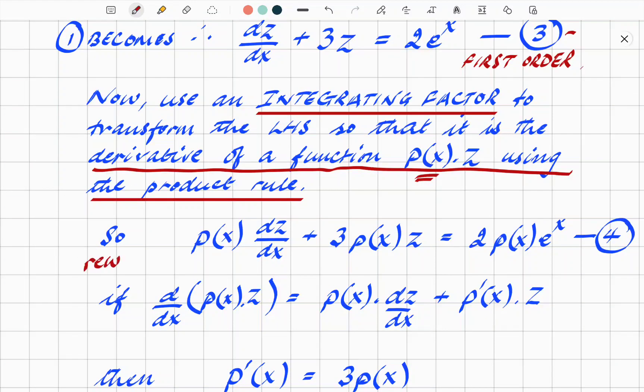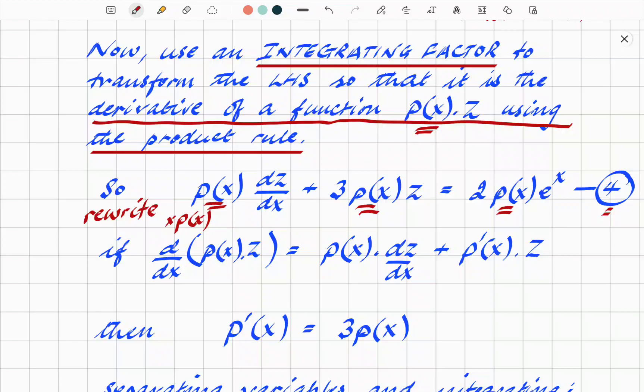Rewrite multiplying everything times p(x). So p(x) times dz/dx + 3p(x) times z = 2p(x)e^x. That's equation 4. We've basically gone back to our reformed equation and multiplied everything by p(x). Using that, if we then use a particular result, look at this thing here, that particular bit, focus on that, the p(x) times z. Differentiating the product p(x) times z gives us p(x) times dz/dx + p'(x) times z. So you've got those two there.